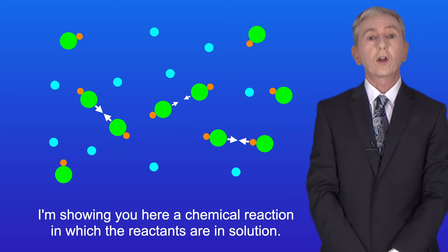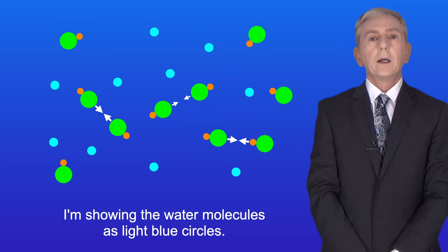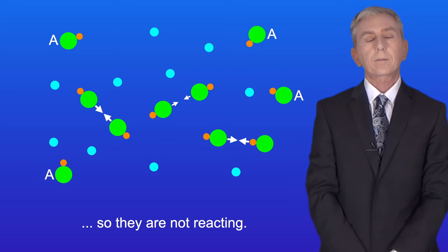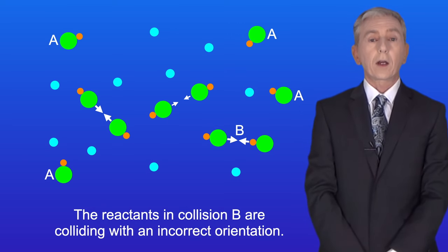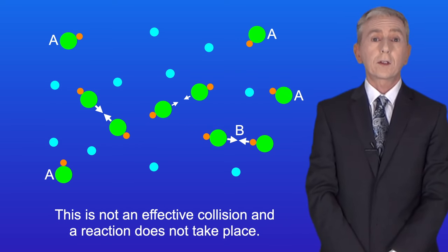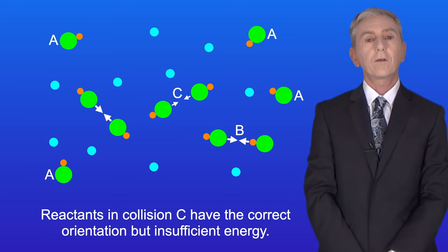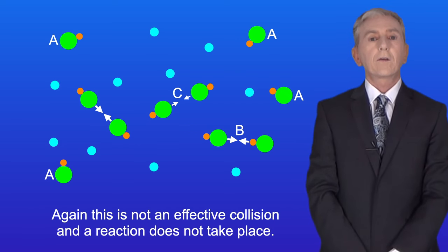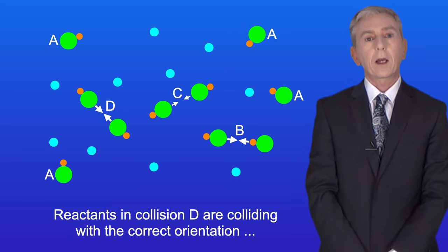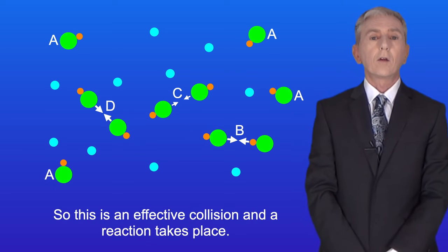I'm showing you here a chemical reaction in which the reactants are in solution. And I'm showing the water molecules as light blue circles. As you can see, reactant molecules shown as A are not colliding, so they're not reacting. The reactants in collision B are colliding with an incorrect orientation. This is not an effective collision and a reaction does not take place. Reactants in collision C have the correct orientation, but insufficient energy. So again, this is not an effective collision and a reaction does not take place. Reactants in collision D are colliding with the correct orientation and with sufficient energy. So this is an effective collision and a reaction takes place.